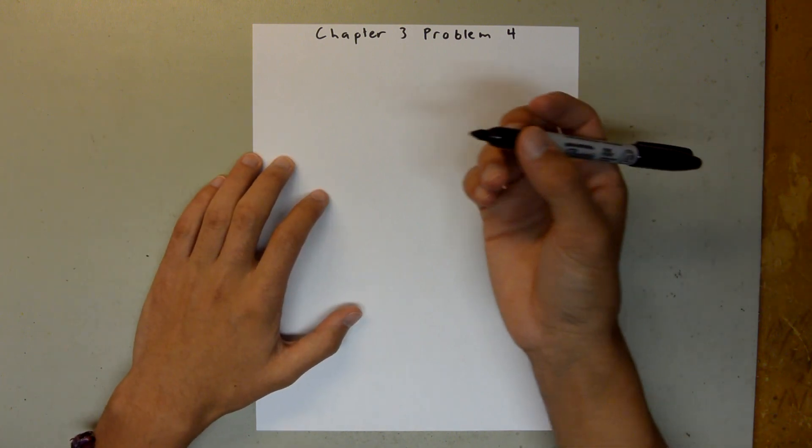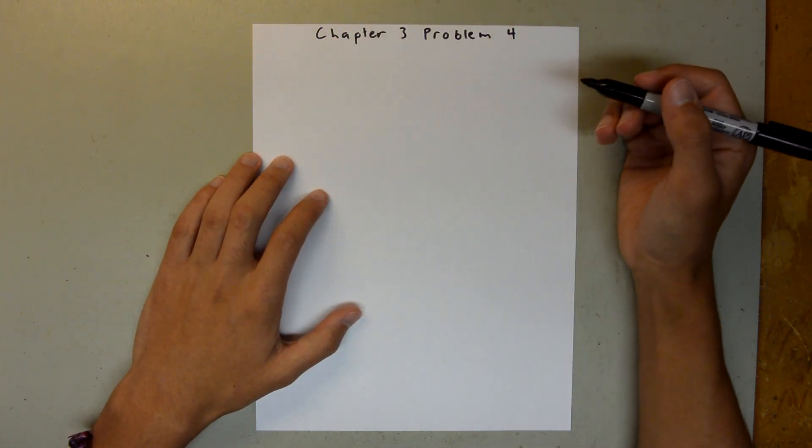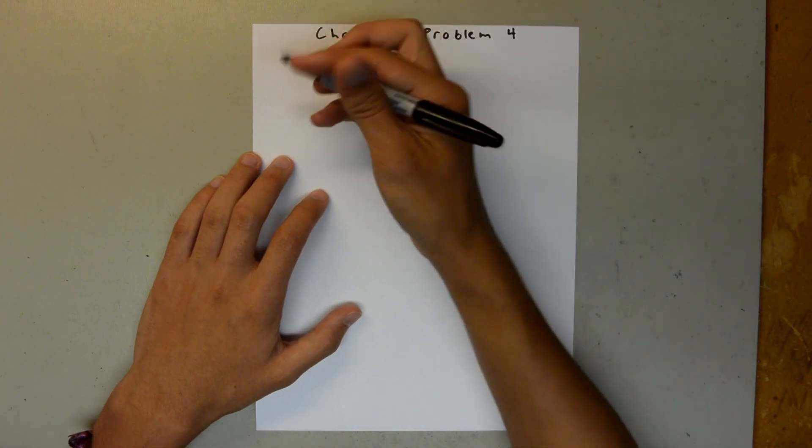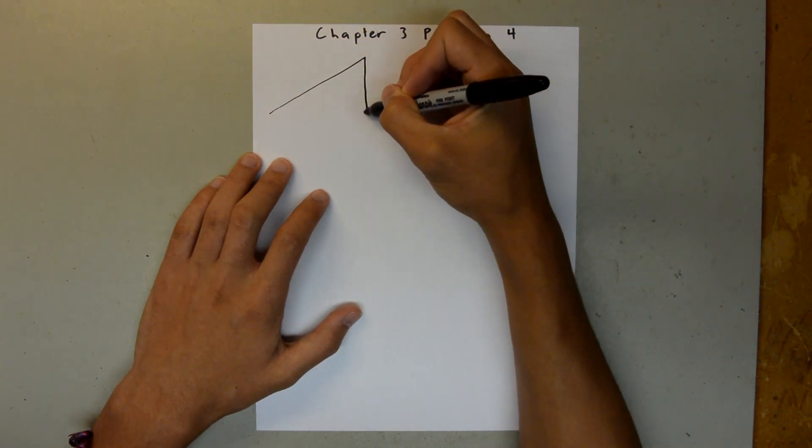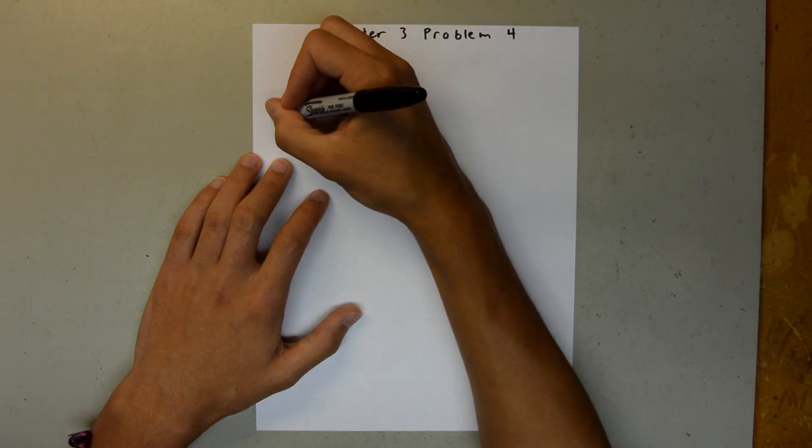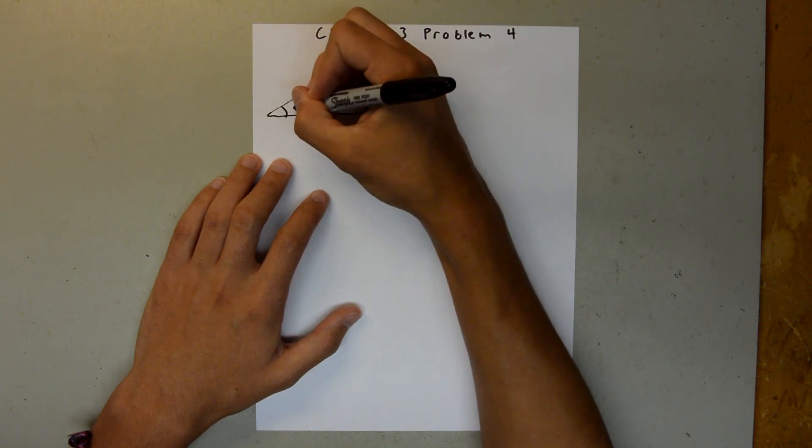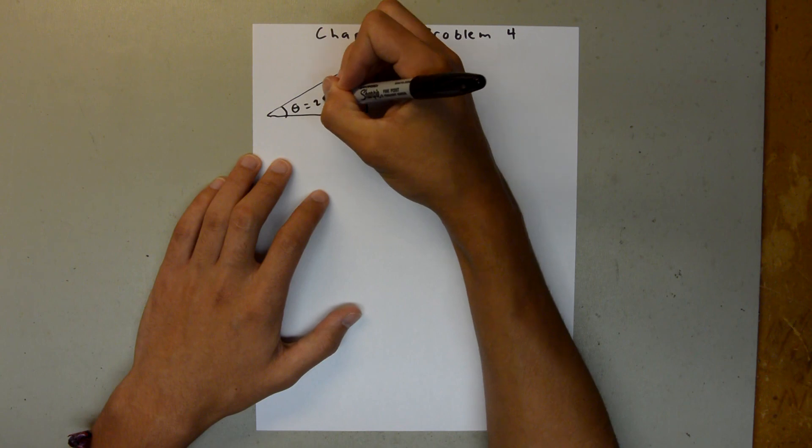So first off, I want to just draw a picture. I'm not going to include the object because it's not really completely necessary. So say this is our inclined plane, and we have an angle here, which is theta, which is 20 degrees.